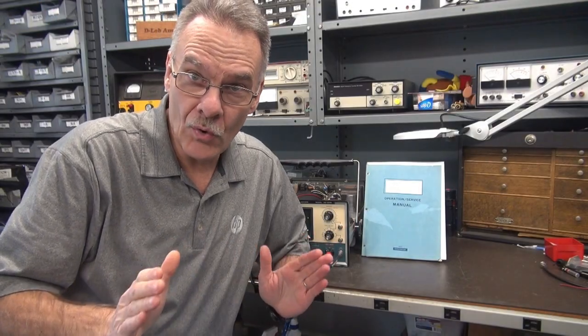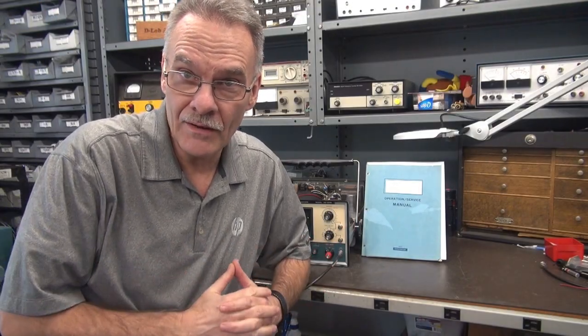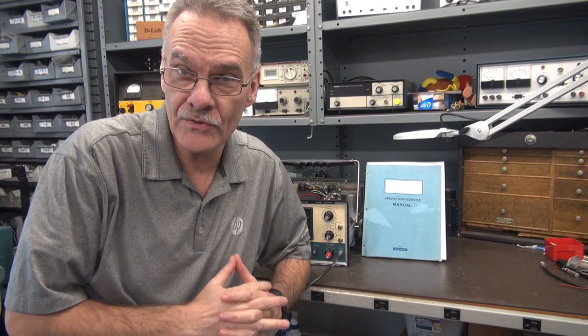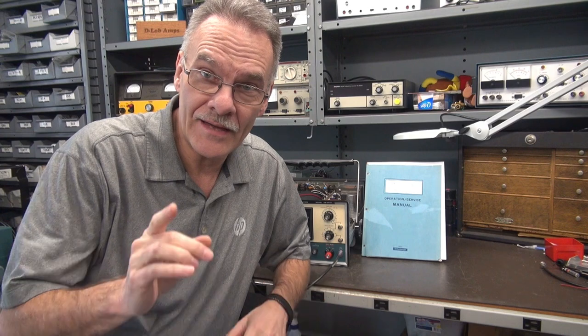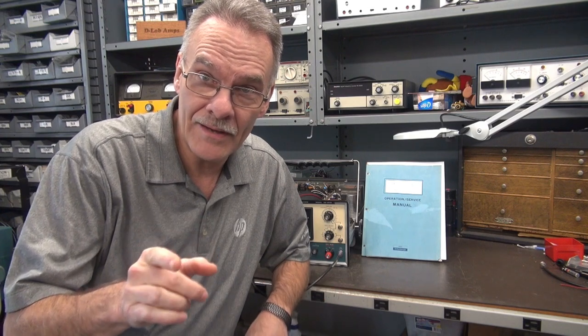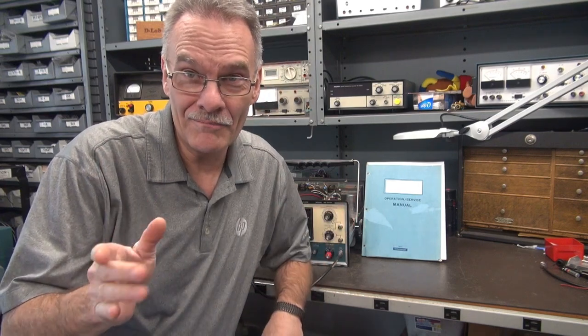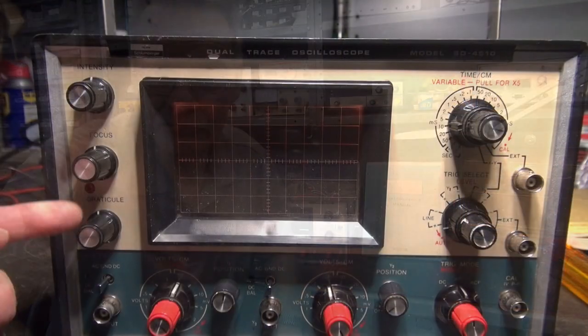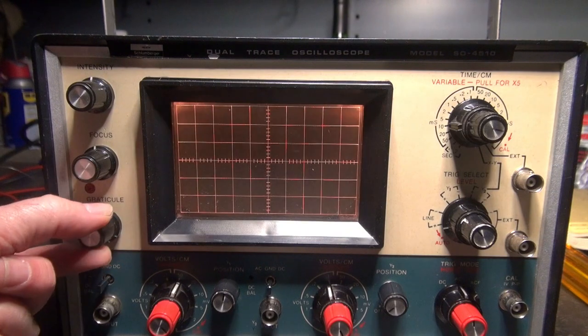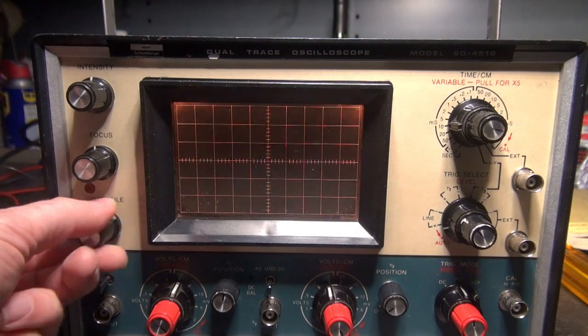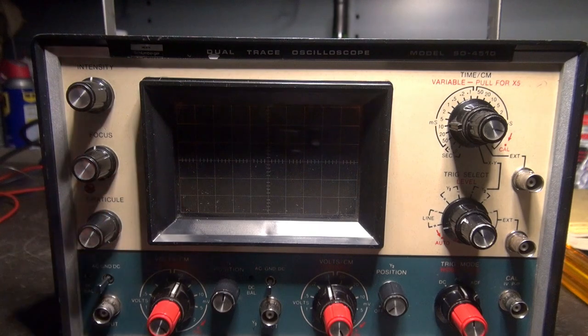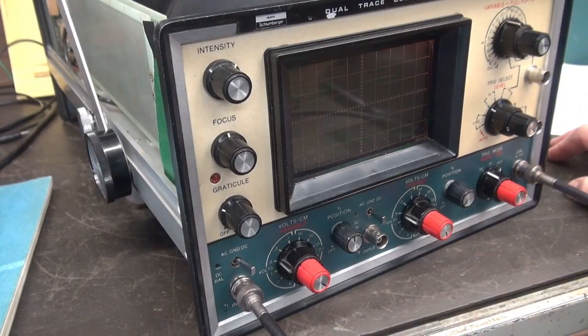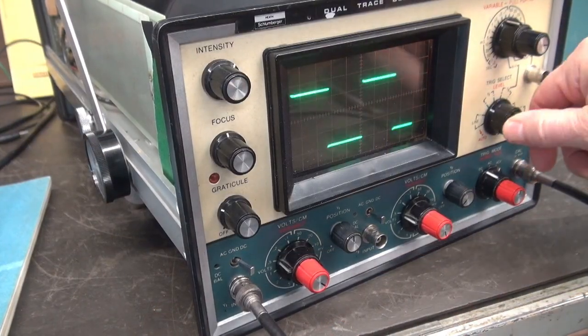Welcome to part three of the Heathkit 4510 oscilloscope repair. In this video, I'm going to change that defective pilot lamp and modify the scope. Notice that the power light's not working, but it's obviously on because you can see the graticule come on. Now that I've got the trigger situation resolved...